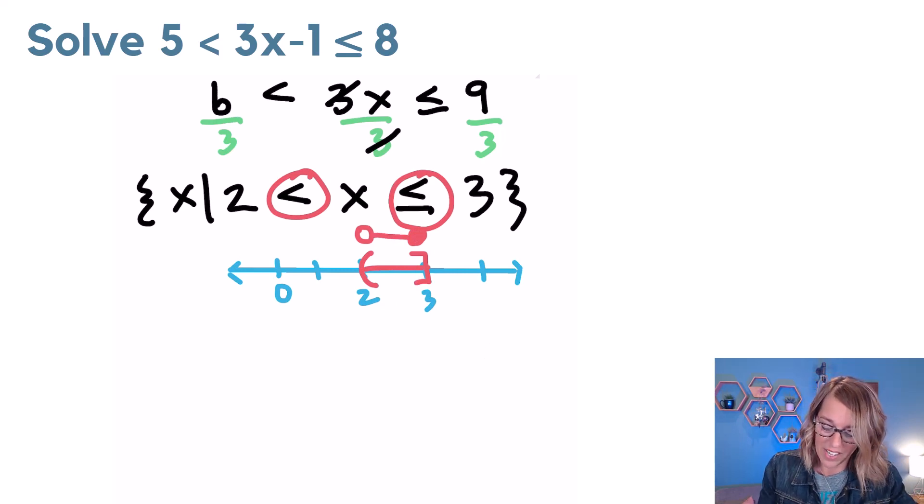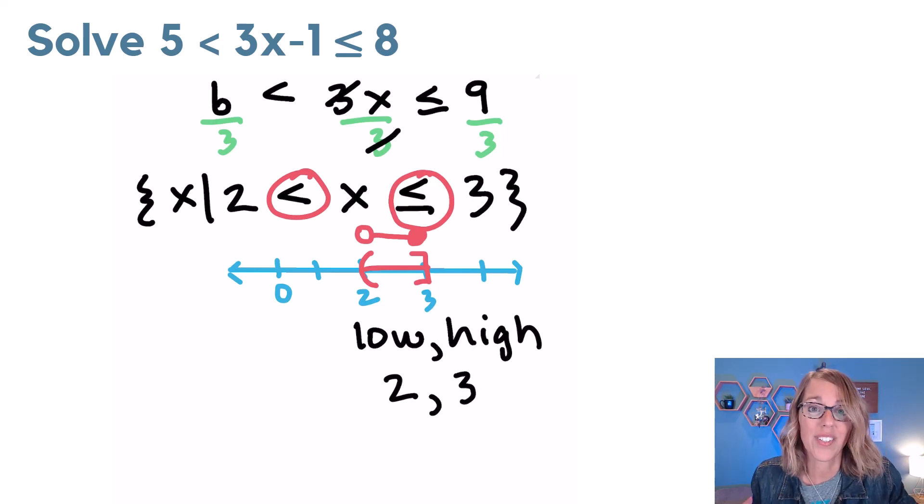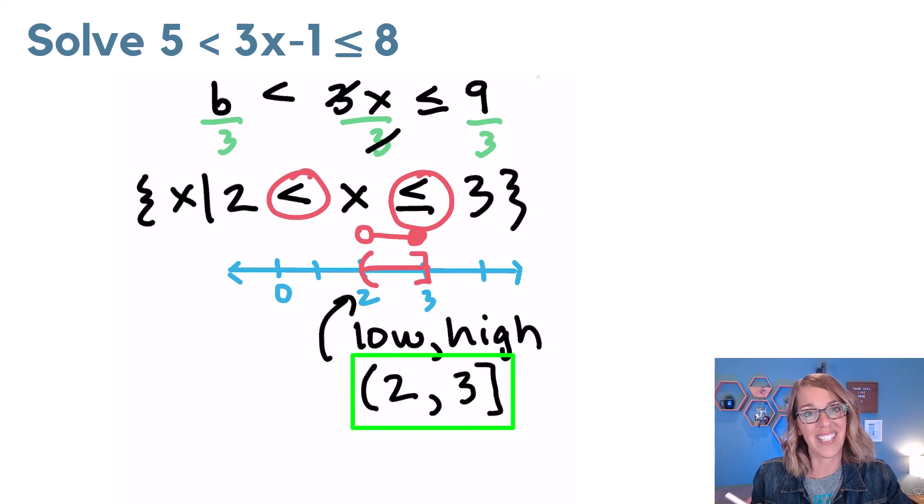Now this makes it super nice for our interval notation. Low, high. My lowest value is 2. My highest value is 3. And I'm going to go ahead and pick up those symbols from my graph. I'm going to open it with a parenthesis since 2 isn't included. Close it with a square bracket since 3 is included.